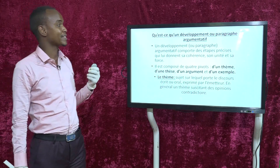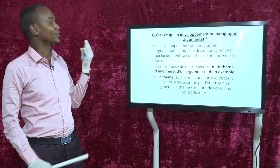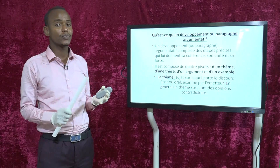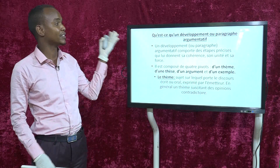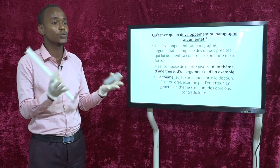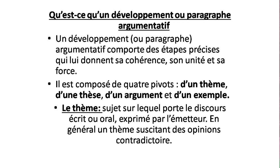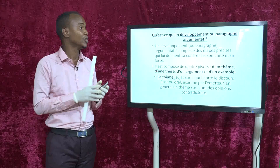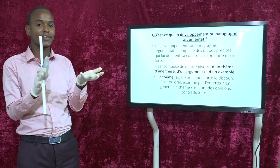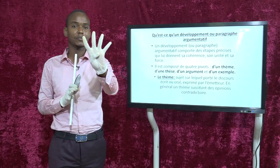Maintenant, nous allons nous intéresser au vif du sujet : qu'est-ce qu'un développement ou un paragraphe argumentatif ? Un développement et les paragraphes, c'est toujours la même chose. Un développement paragraphe argumentatif comporte des étapes précises qui lui donnent sa cohérence, son unité et sa force. Il est composé de quatre pivots : le thème, la thèse, les arguments, et les exemples.